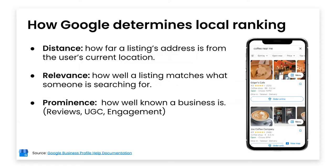Let's dive into Google specifically. This comes directly from Google's documentation on how they determine local ranking. The three main factors are distance, relevance, and prominence. Starting with distance — this is basically how far the user searching is from the actual listing that could be returned. For example, if you're searching 'coffee near me' and you're in New York, we're only going to see listings for New York. Having the correct address and correct lat/long is extremely important so your listings can show up for near me searches or searches with different geomodifiers.